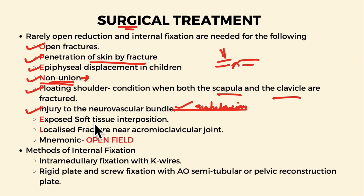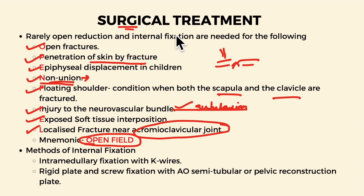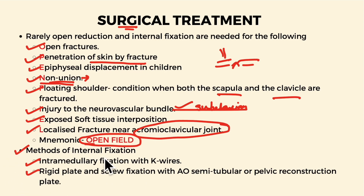Further indications include exposed soft tissue interposition and localized fracture near the acromioclavicular joint. A mnemonic called 'open field' can help remember these indications for surgical treatment. The different methods for internal fixation are intramedullary fixation with K-wires and rigid plate and screw fixation.